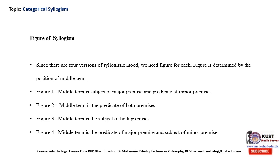Figure 3 is again determined by the position of the middle term. If the middle term is the subject of both premises — for example, if I say 'All men are dreamless' and then 'All men are brave' — the middle term is 'men,' which is used as the subject of both premises. In this case, the figure of this kind of syllogism would be Figure 3.